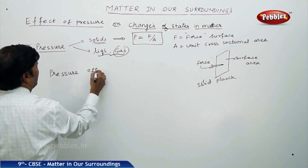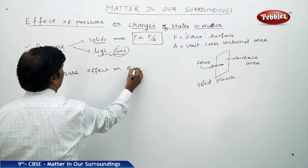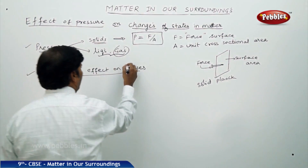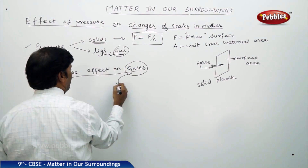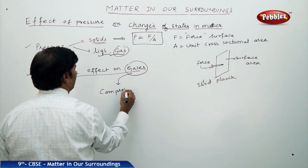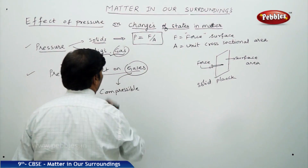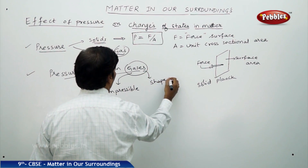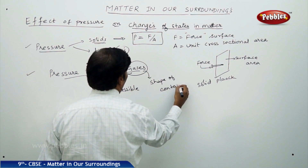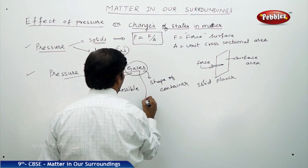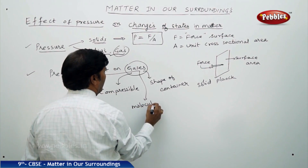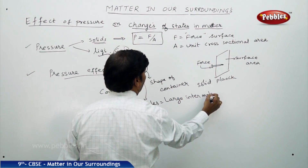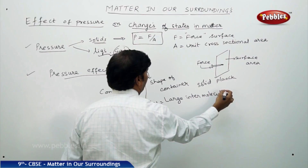Regarding the pressure effect on gases: gases have the property of compressibility — they are compressible and they assume the shape of the container. Also, in gases, the molecules have large intermolecular spaces.